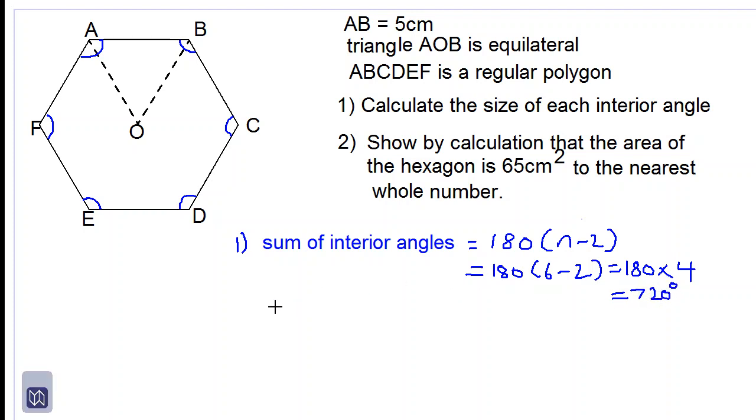So the size of one interior angle would therefore be 720 divided by the number of interior angles. We have 6 interior angles, so 6 into 720 is 120 degrees. So each interior angle is 120 degrees, and that's the answer for number one.